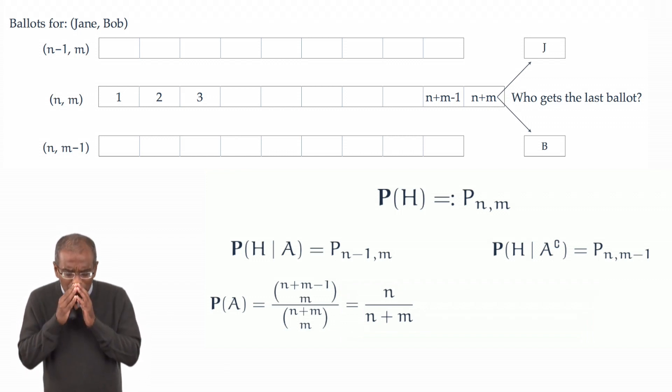Very simple. We pause and say, is this reasonable? Of course it is. There are n plus m ballots. The chance that a chosen ballot goes to Jane is naturally enough the proportional number of ballots for Jane out of the total, n over n plus m.